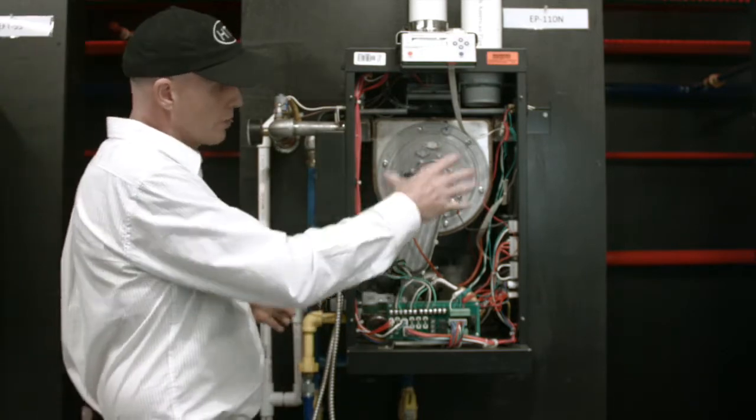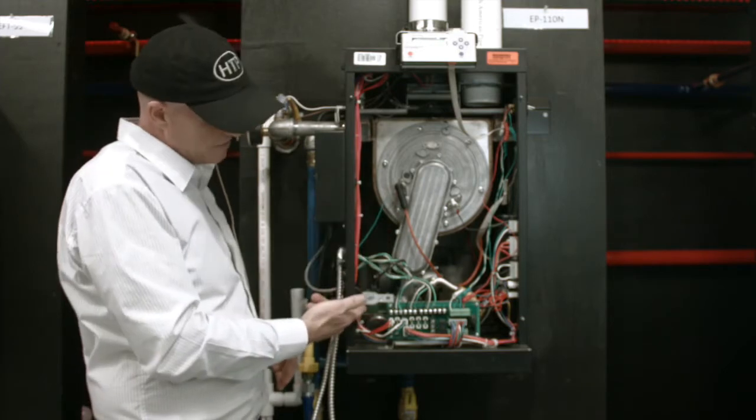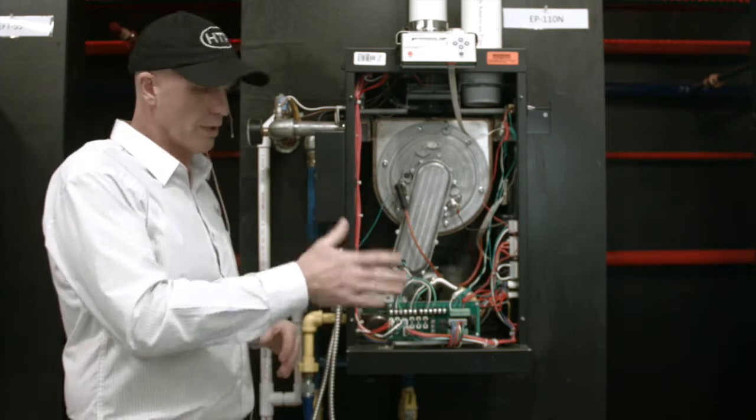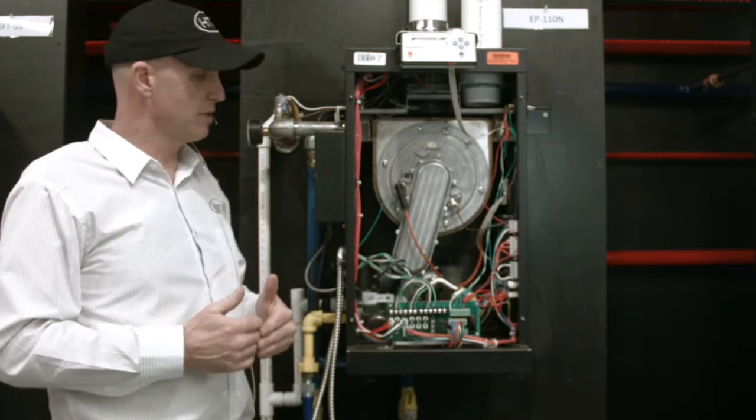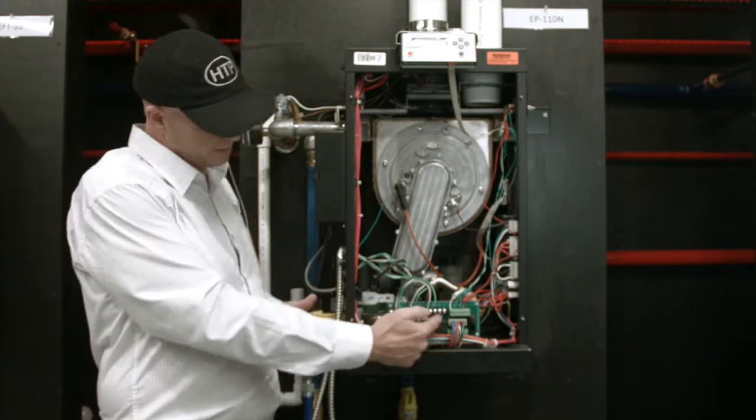Inside here, we have our water tube style heat exchanger. Underneath that is our blower motor and our gas valve and our control board. This is a new 928 control board. So when we get into the control, this boiler has some extra outputs as well as inputs that we can utilize for our benefit. So with that being said, we'll take a look at the control.